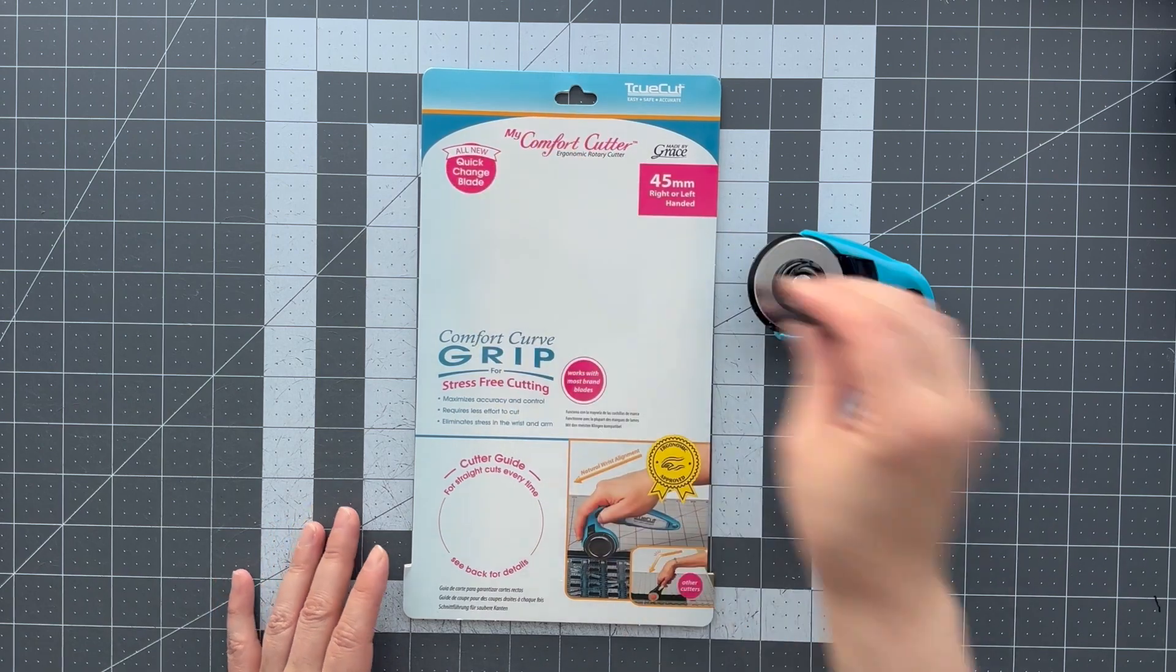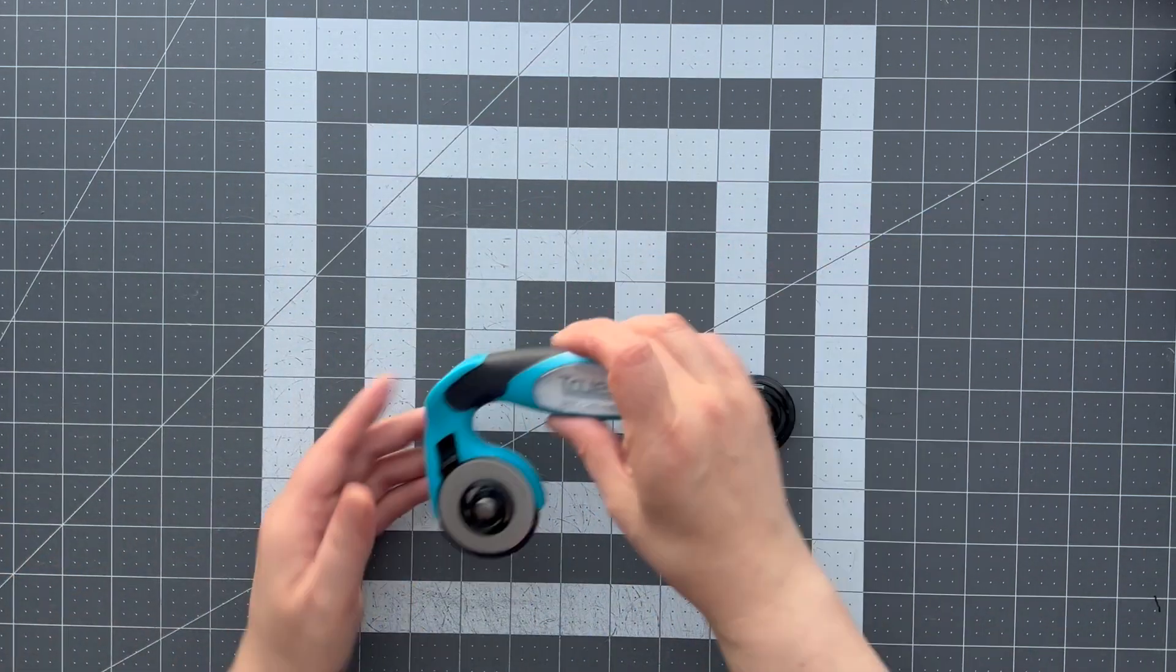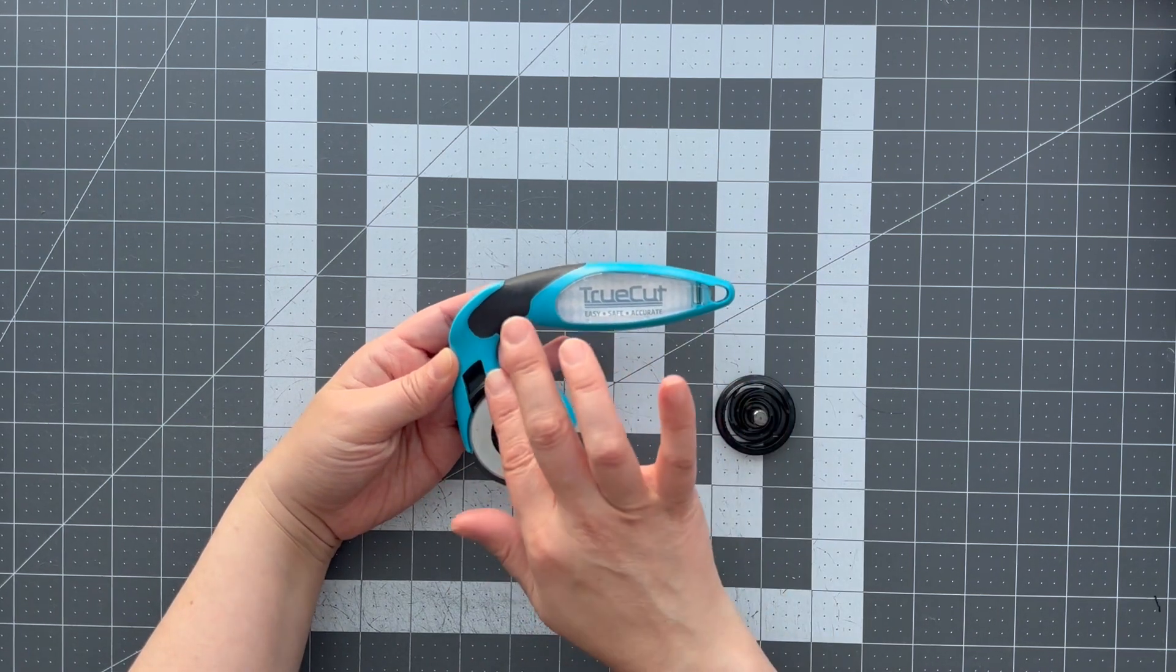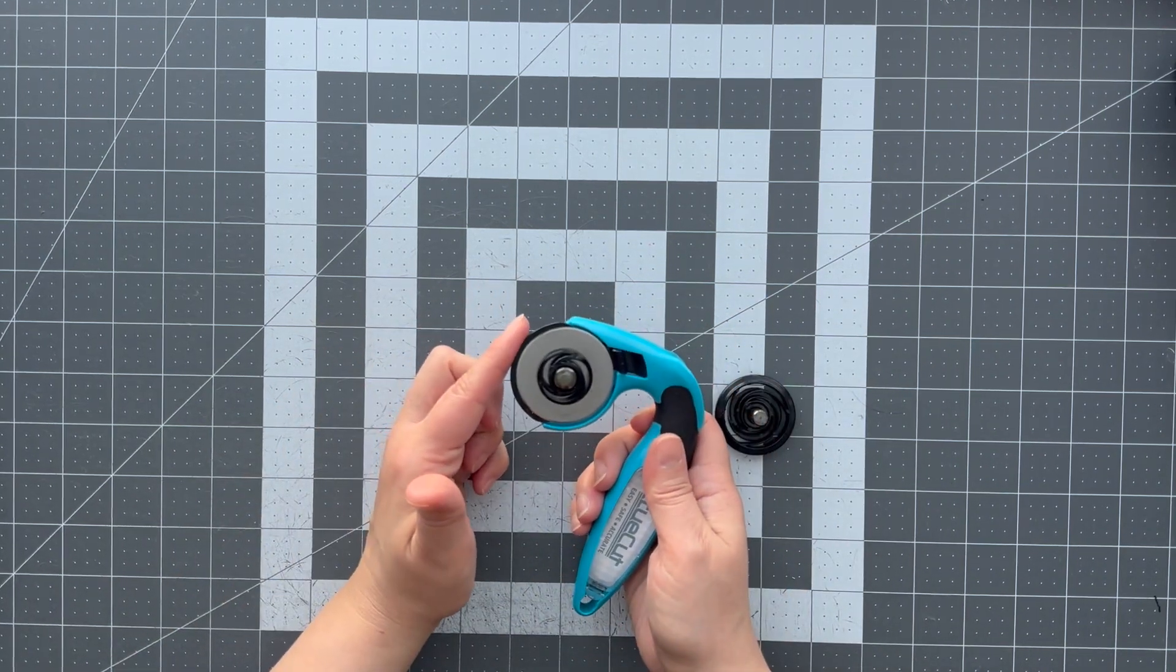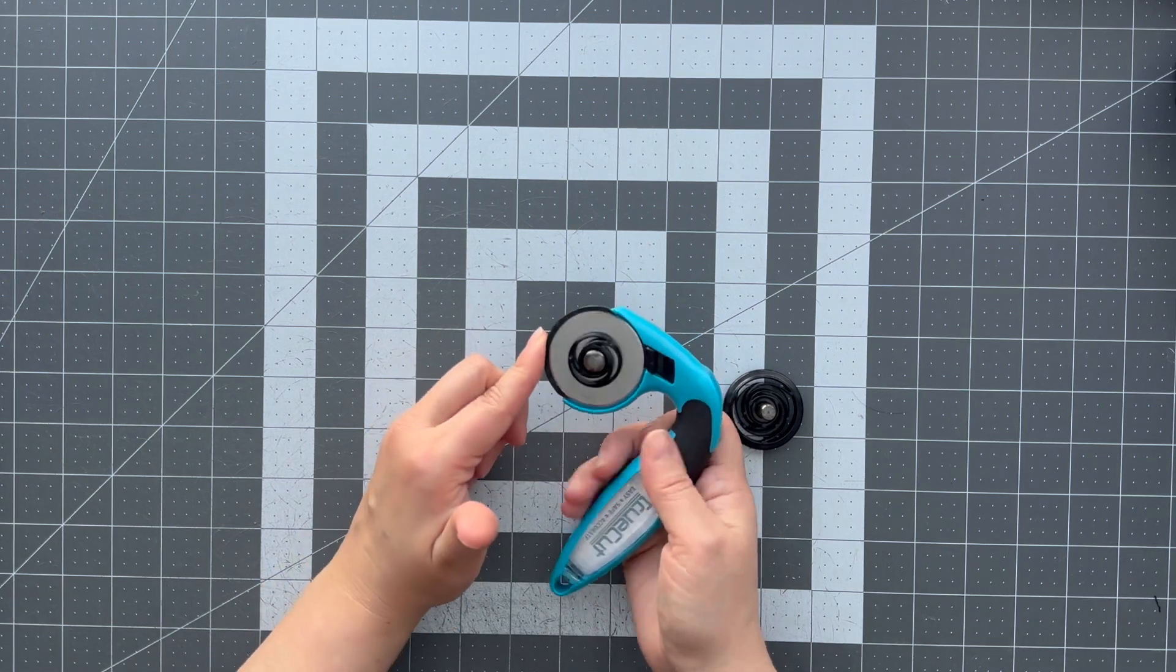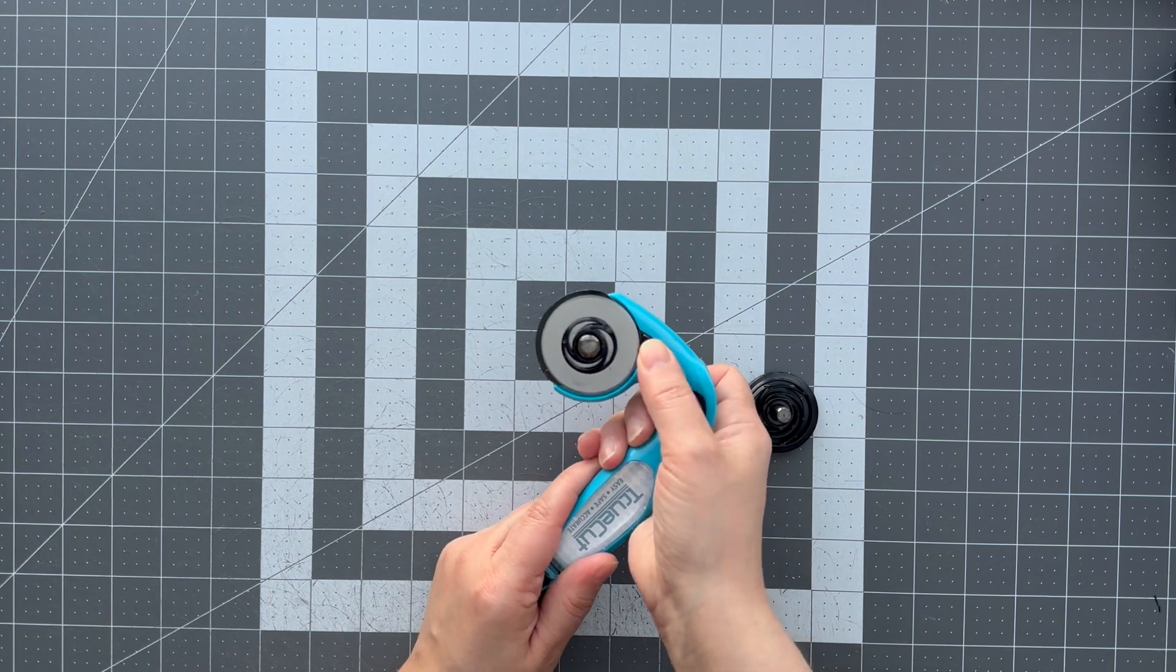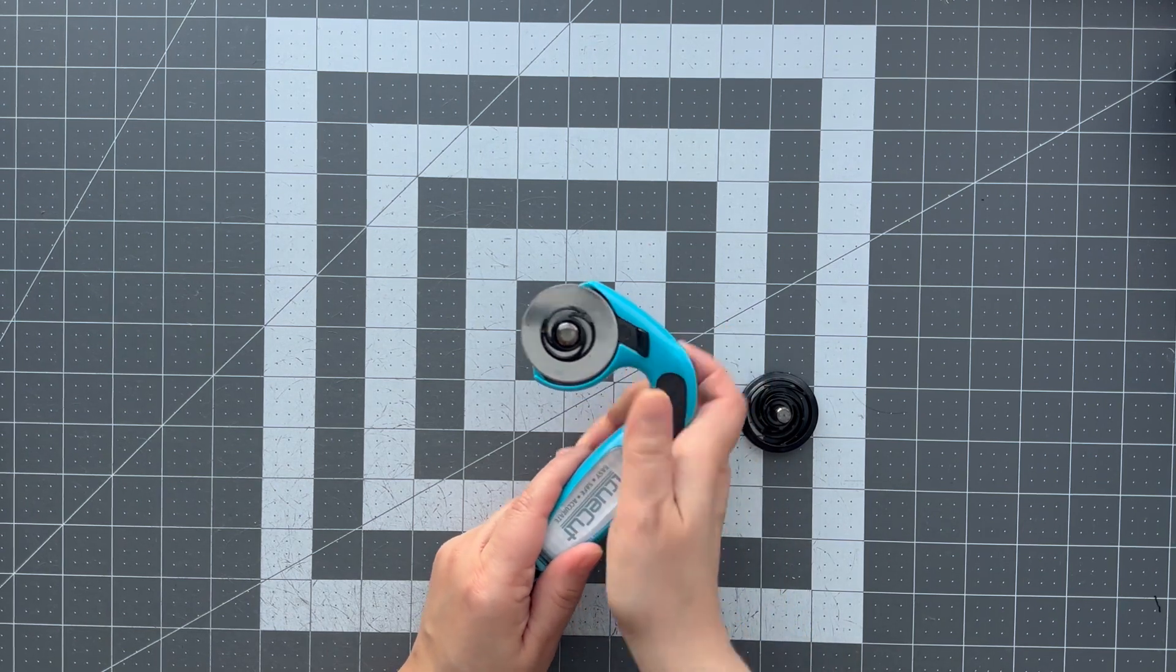Let me walk you through the components. This is the cutter itself. It has a blade, it has a blade guard which is this black piece. You can disengage the blade guard by pressing that little slider up and down.